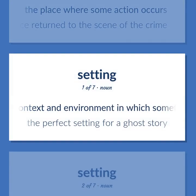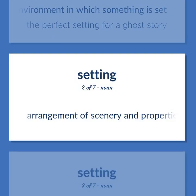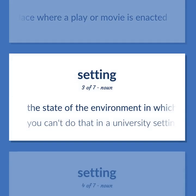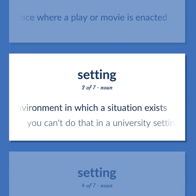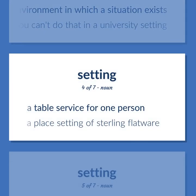Setting: The context and environment in which something is set. The perfect setting for a ghost story. Arrangement of scenery and properties to represent the place where a play or movie is enacted. The state of the environment in which a situation exists. You can't do that in a university setting. A table service for one person. A place setting of sterling flatware.